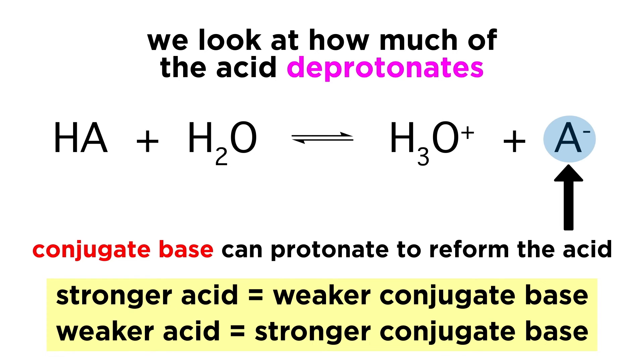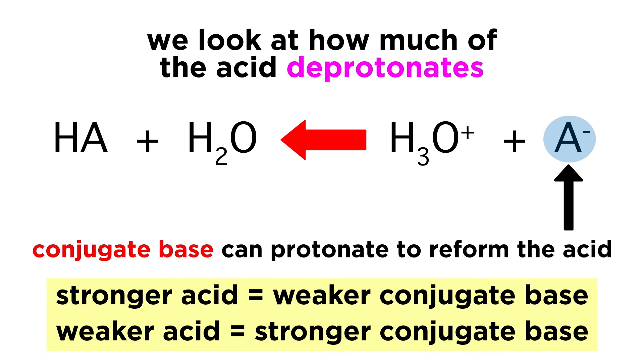One last thing we should understand is that the stronger an acid or base, the weaker its conjugate. In other words, the better a molecule is able to give up a proton, the less likely its conjugate is to gain one, and the less likely a molecule is to give up a proton, the better its conjugate will be at gaining one. Some pKa values for common functional groups will easily be memorized over time simply through repetition, but for now let's simply make sure we understand what pKa is, and precisely how it reports the acidity of a compound, in that a lower pKa corresponds with a stronger acid.